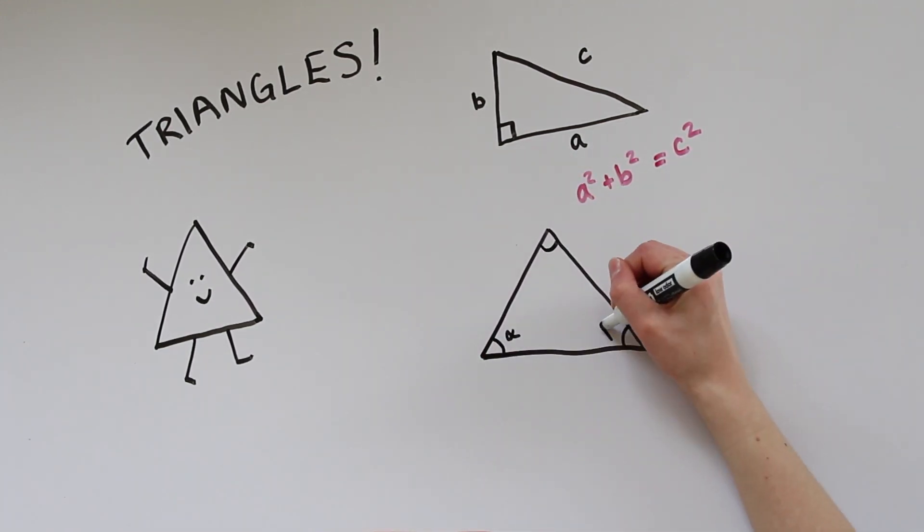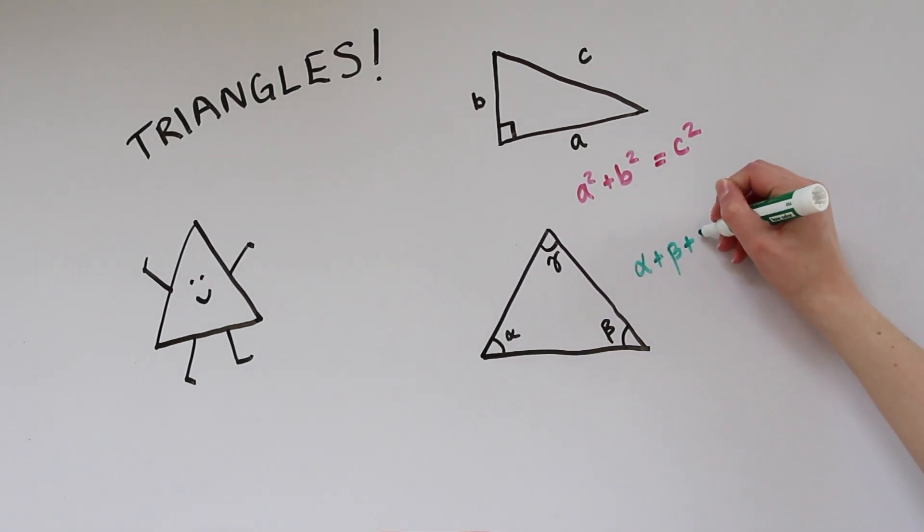Today we're going to talk about a fact which actually holds for all triangles. The sum of the three interior angles is always 180 degrees.